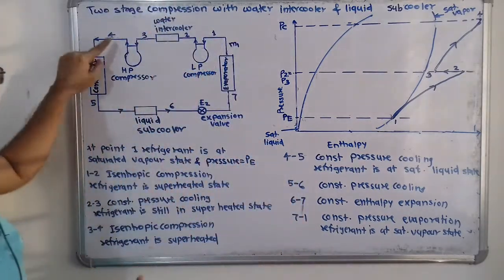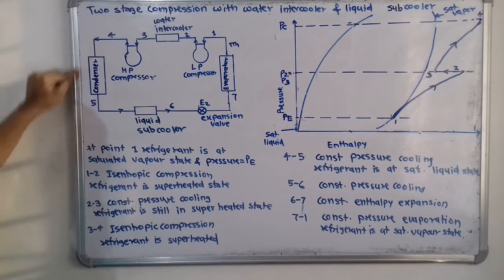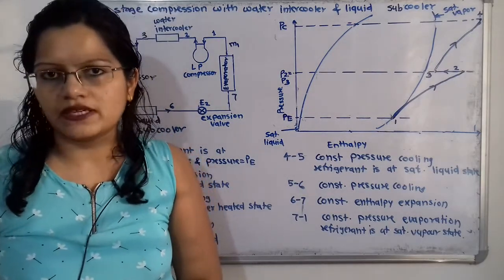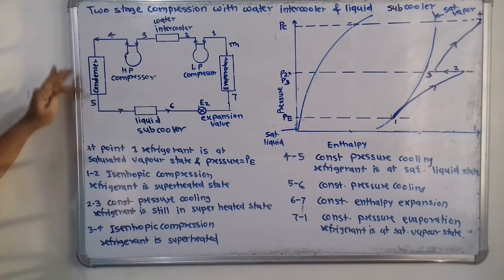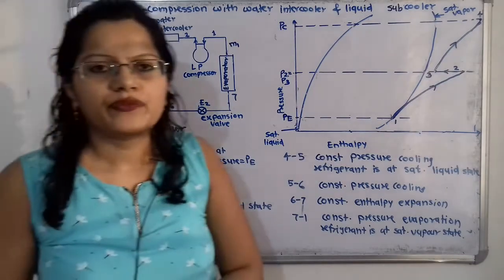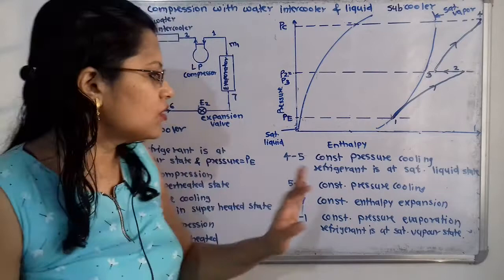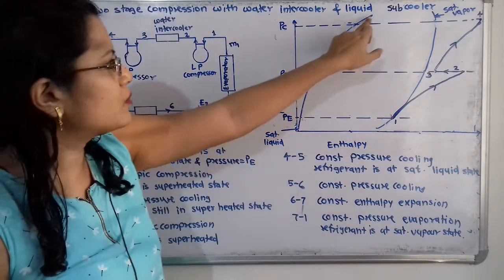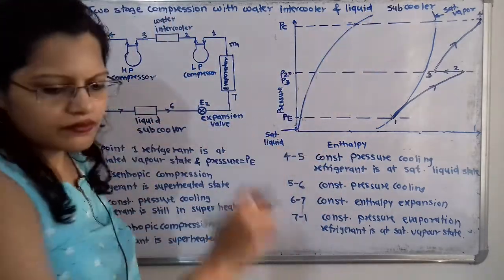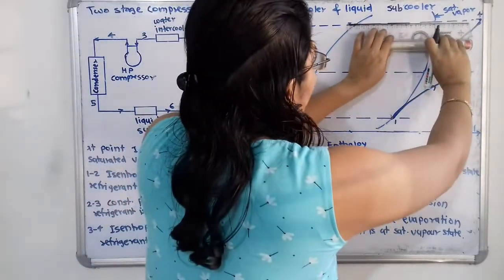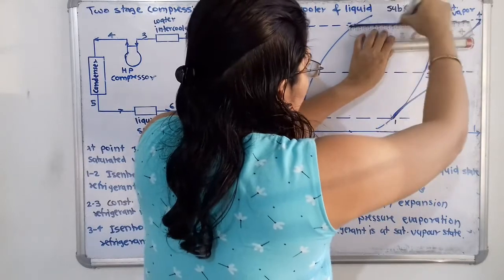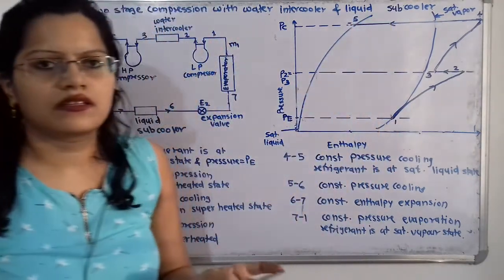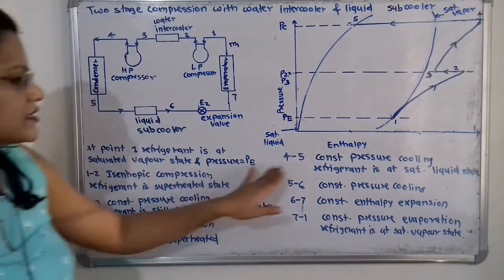After point 4, the refrigerant enters the condenser where constant pressure cooling takes place at pressure Pc. Process 4 to 5 is constant pressure cooling, and after cooling the refrigerant reaches the saturated liquid state. We draw a straight horizontal line at pressure Pc from point 4 to point 5 on the saturated liquid line.